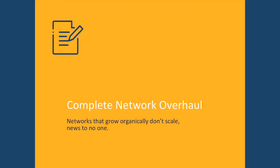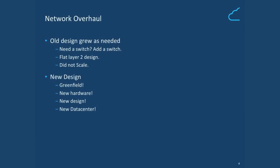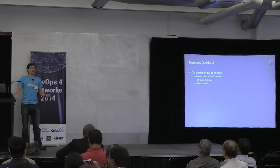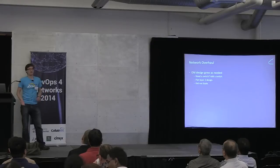A little bit of background. Box recently, over the past year and a half to two years, went through a complete network overhaul. Our network had been growing organically over the years — it was very much a 'if we need a new switch, we add a new switch' mentality. It was a flat layer two design and it just did not scale. You start with a couple cabs, you add a couple more, and eventually it becomes unmanageable.